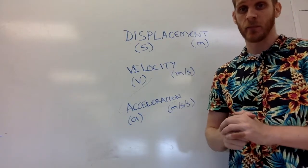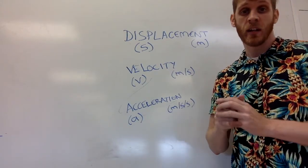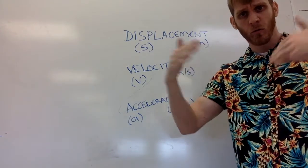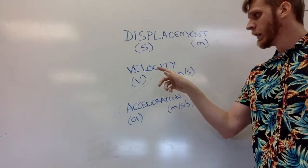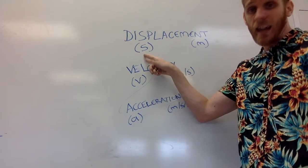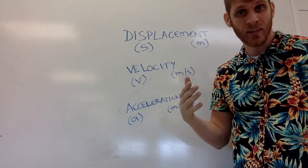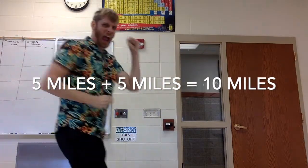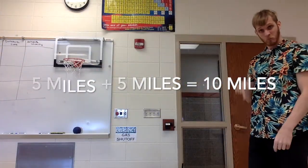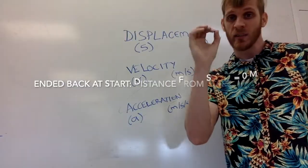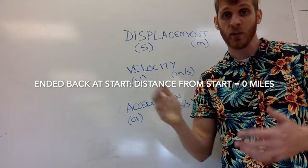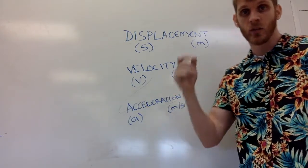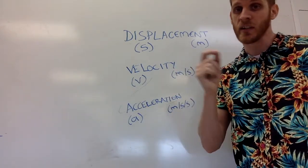The first thing is displacement. The definition of displacement is the distance traveled from your starting point — basically where you're located. The symbol for displacement is S because D is used for distance, and distance is just the total distance. For example, if I run five miles north and five miles south, my distance is ten miles but my displacement is zero because I ended up right back where I started. So distance and displacement are similar but different.